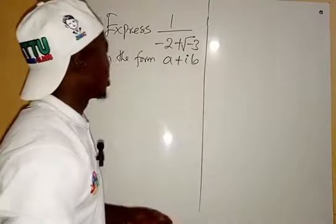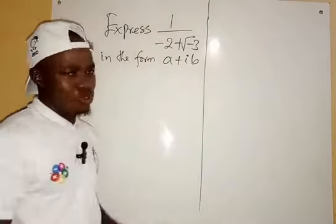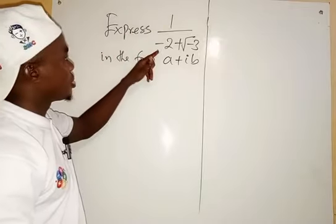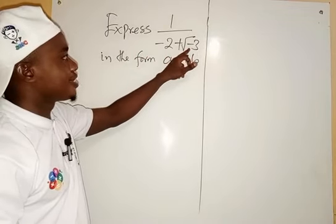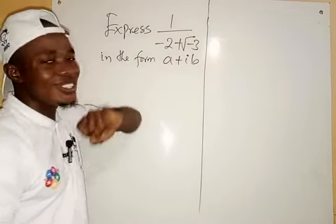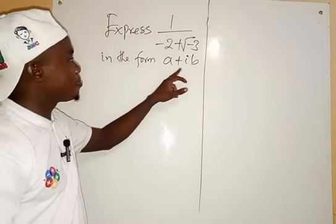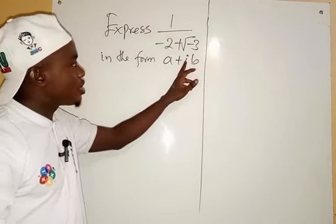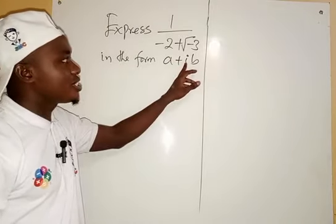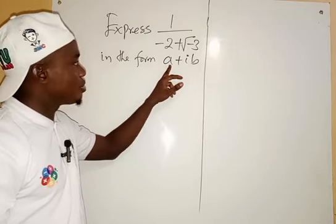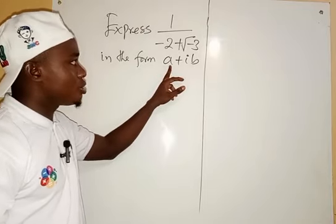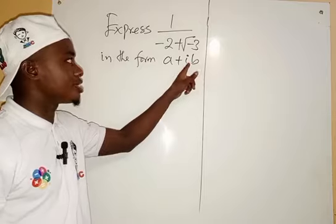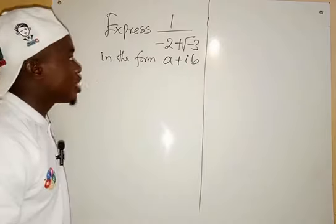We have this question on the board: express 1 over minus 2 plus root minus 3 in the form a plus ib. Don't panic — whenever you see i, this is telling us it's a complex number, where a is the real number and b is the imaginary number because it's attached to i.